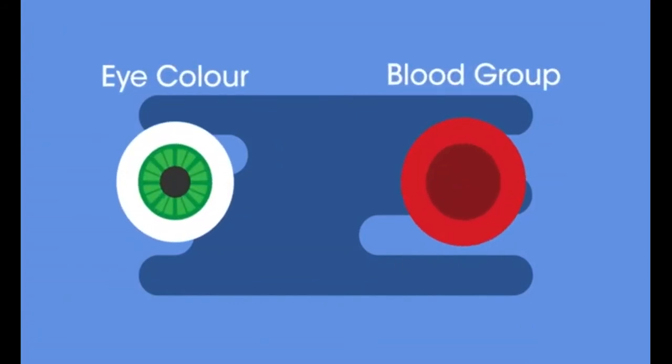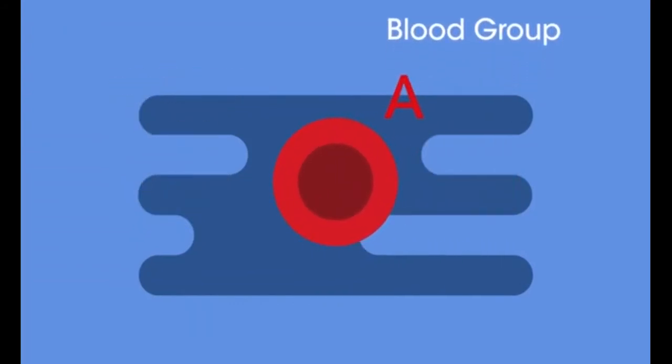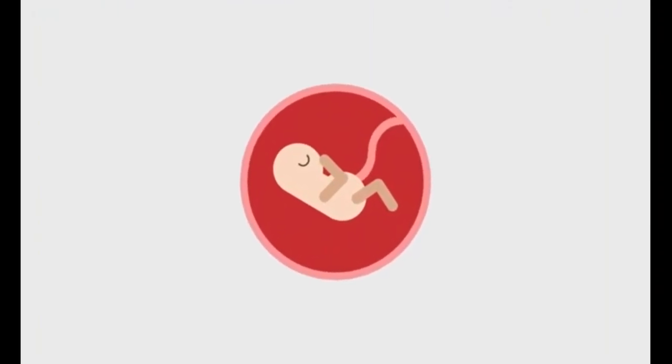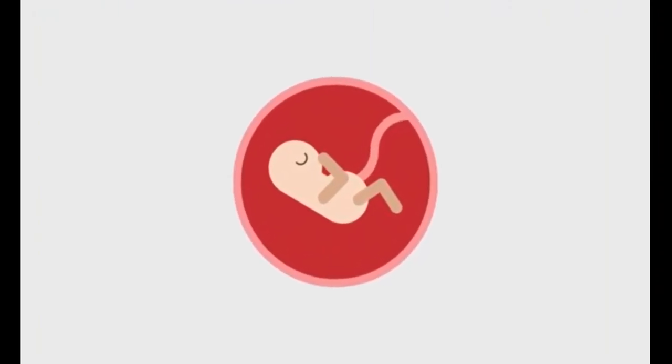Some examples of variation in humans that are controlled by genes include eye colour and blood group. If you have blood group A, it's because you have the alleles for this characteristic. This is genetic variation — it is something you were born with and nothing can change it.